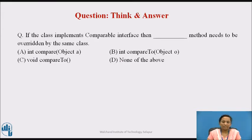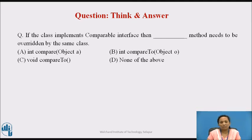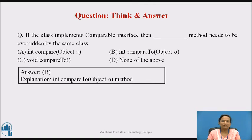You can pause the video for some time and think and answer the following question: if the class implements the comparable interface, which method needs to be overwritten by the same class? Option A: compare method returning int with one object parameter. Option B: compareTo method returning int with one parameter of type object. Option C: compareTo method returning void without parameter. Option D: none of the above. The correct answer is the compareTo method, which needs to be overridden by the class implementing the comparable interface.